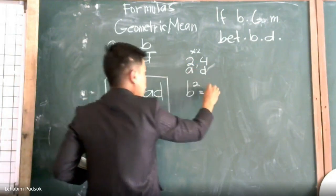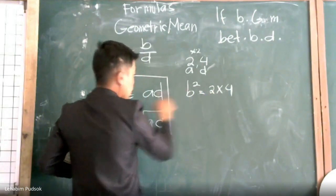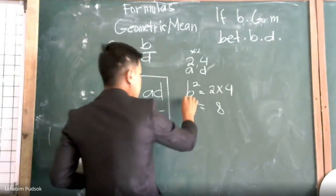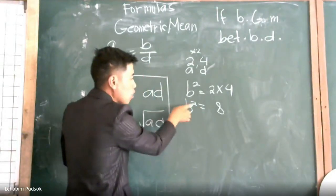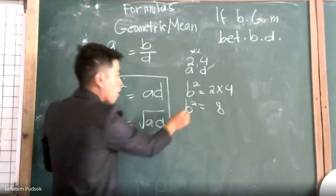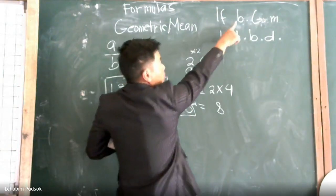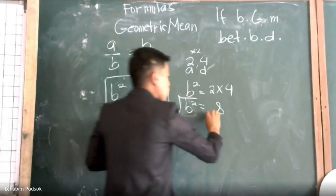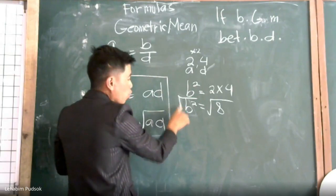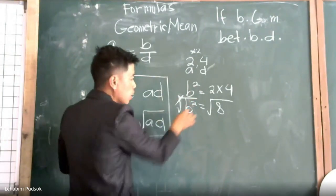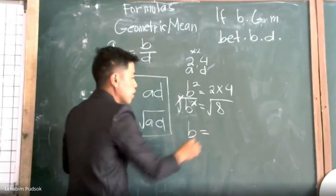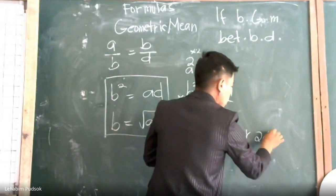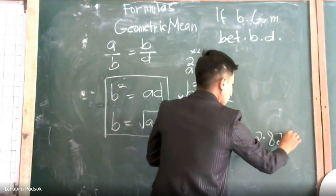B raised to 2 is equal to 2 times 4, which is 8. To find B, we extract the exponent — we take the square root of both sides. The square root of B raised to 2 cancels the square root and the exponent, leaving just B. So B is equal to the square root of 8, which is approximately 2.828.